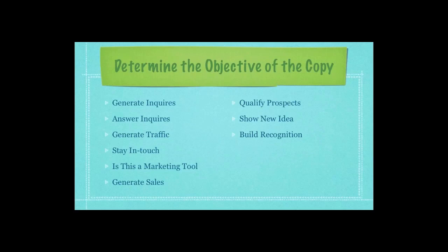Determine the objective of your copy. Is it just to generate inquiries, answer inquiries, generate traffic by telephone or website, stay in touch, generate sales on its own, qualify prospects, show new ideas, or just build recognition? Most major corporations just need to build recognition, continue building it, and stay in touch — that is why their marketing is completely different than yours. Yours is to drive traffic; they already have the traffic and just want to maintain it. Hence, they just want to stay in touch, make you laugh, and keep you coming back.